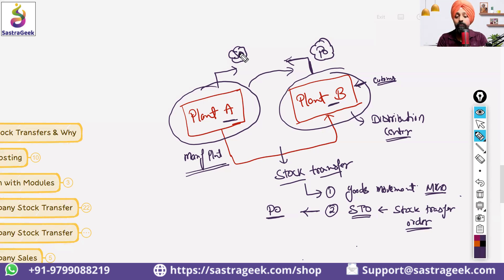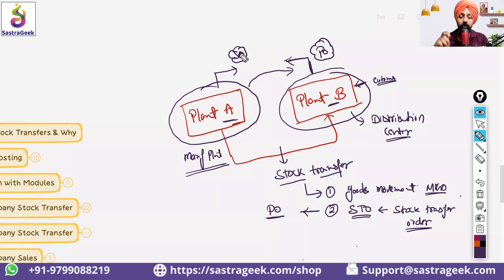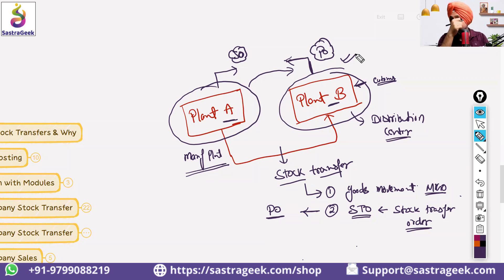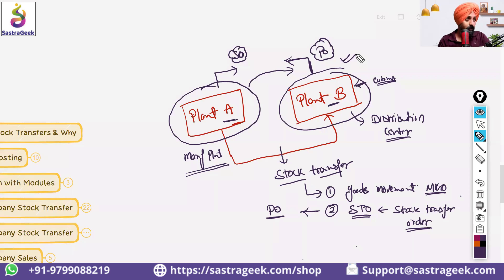Transfers don't only happen between plants — there are multiple different kinds of transfers. For example, plant-to-vendor is a return scenario. There is also bin-to-bin, SLOC to SLOC, intra-company transfers, and store allocation to store allocation transfers. Stock transfer orders are always preferred to be created from the requirement side — plant B, which has the requirement, would create the STO because it wants to buy the material.